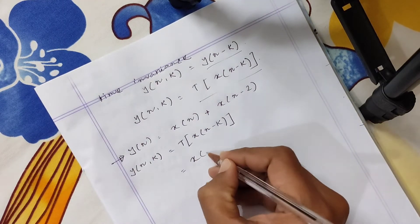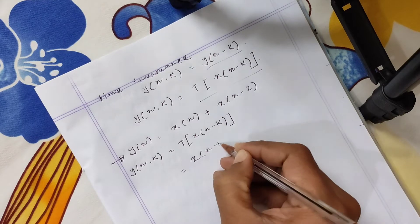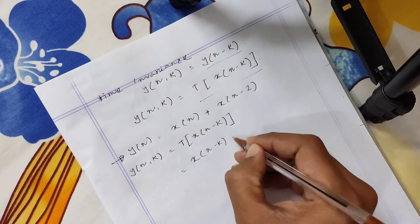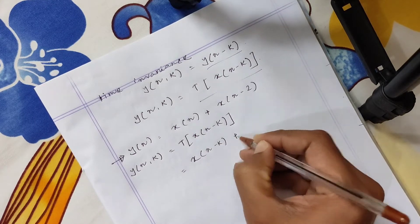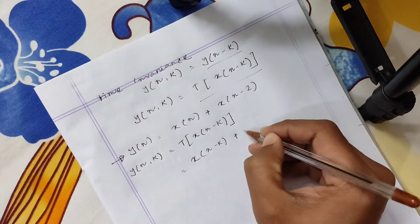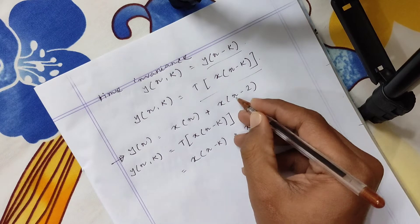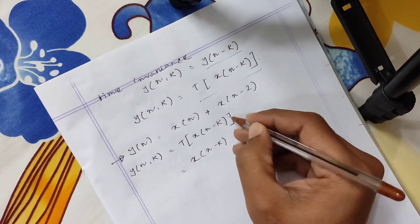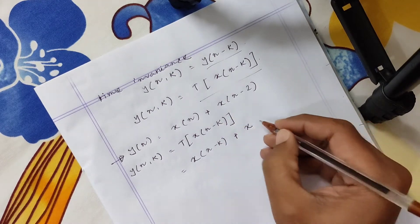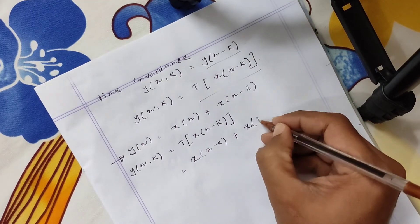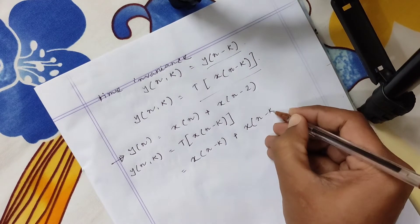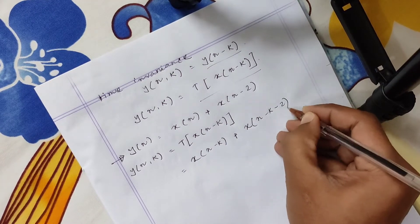So it will be x[n-k] plus x[n-k]. So it will be n minus k minus 2. n minus k minus 2.